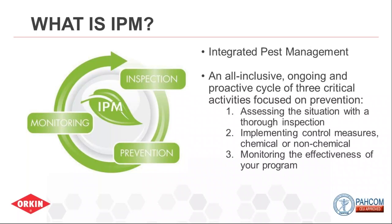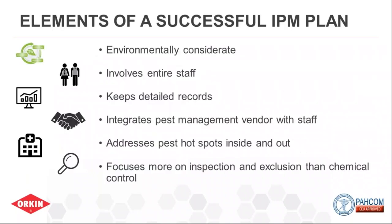That brings us to monitoring the effectiveness of the program. From identifying a problem, figuring out what it is, implementing non-chemical control measures first — and then using a chemical only if necessary. The goal of an IPM program is to reduce the number of times you actually need to apply chemical in an environment, especially in something as sensitive as an exam room or an office suite where patients are having procedures done.